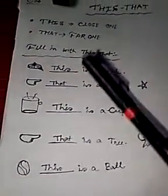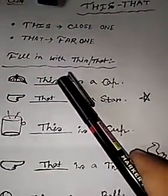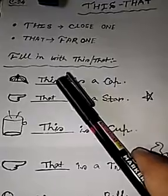Ball - near one, so 'this is a ball'. Understand? That means when something is close to you, use 'this'. And far from you, use 'that'. For near, 'this'. For far, 'that'. Understand?